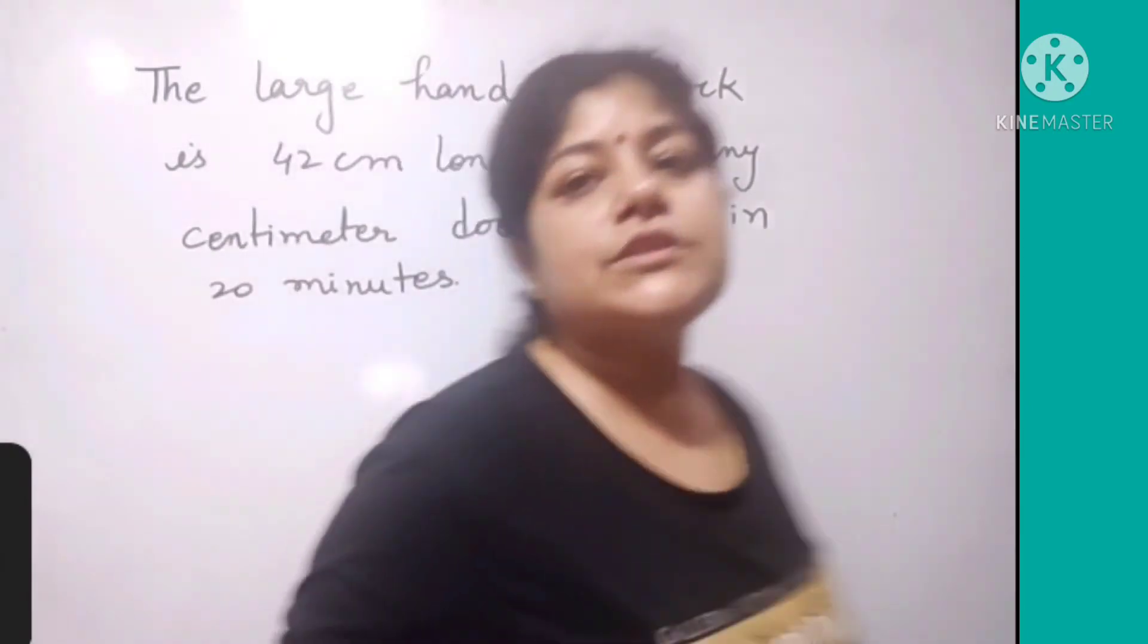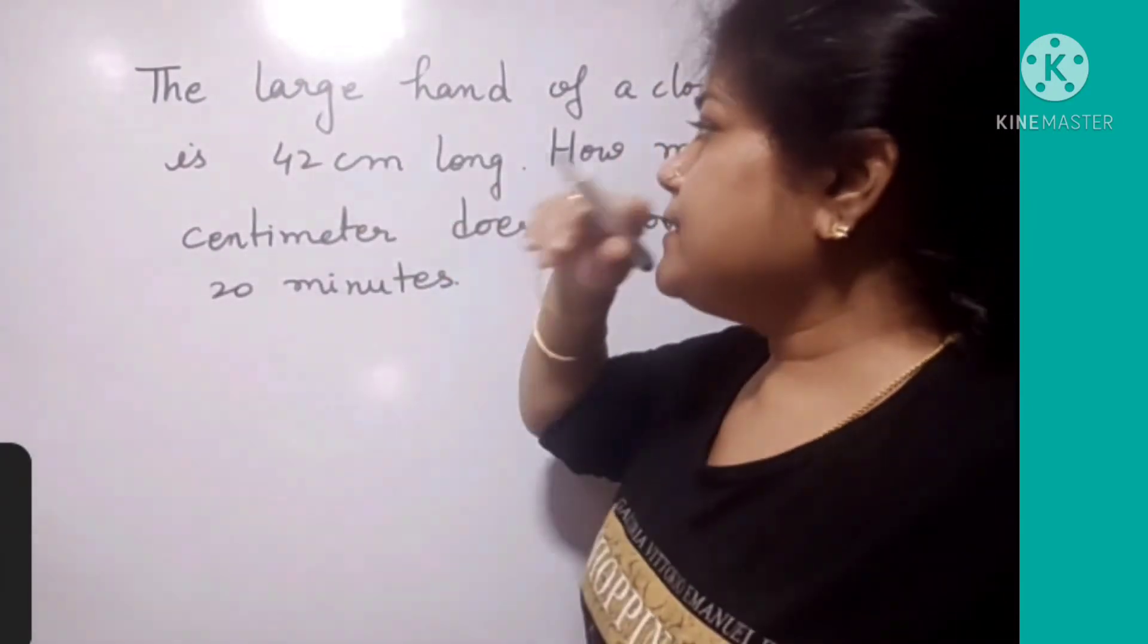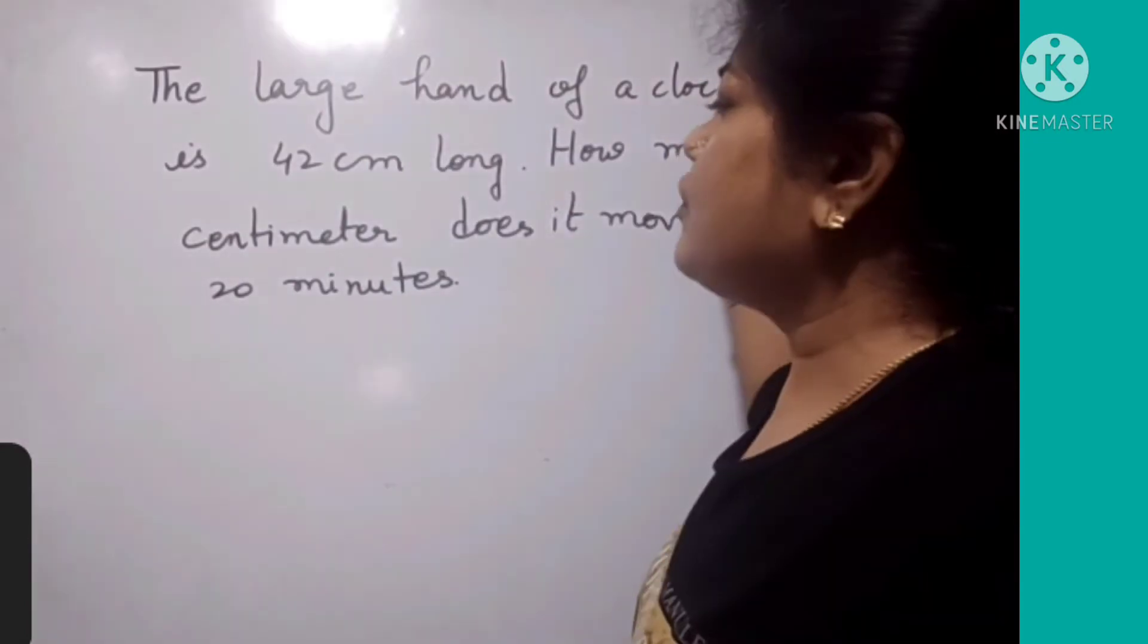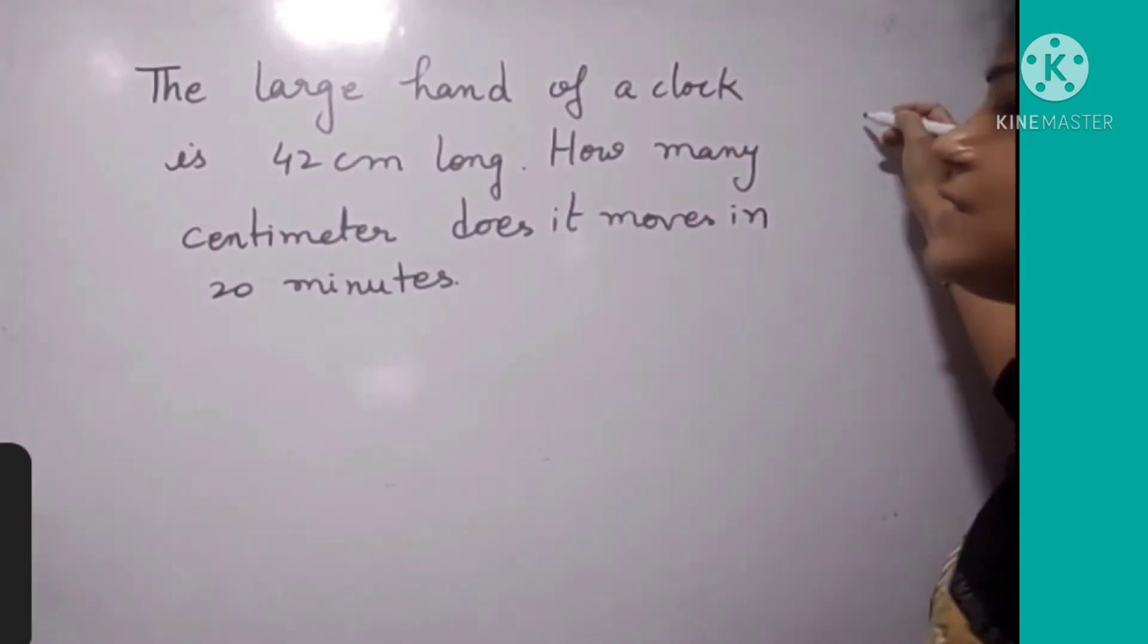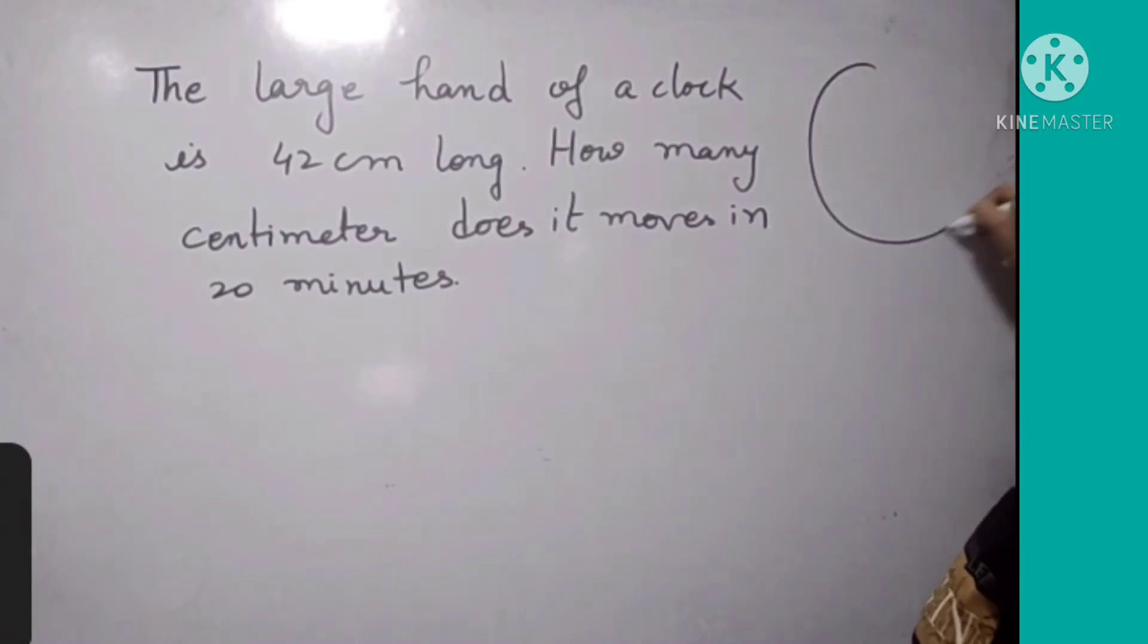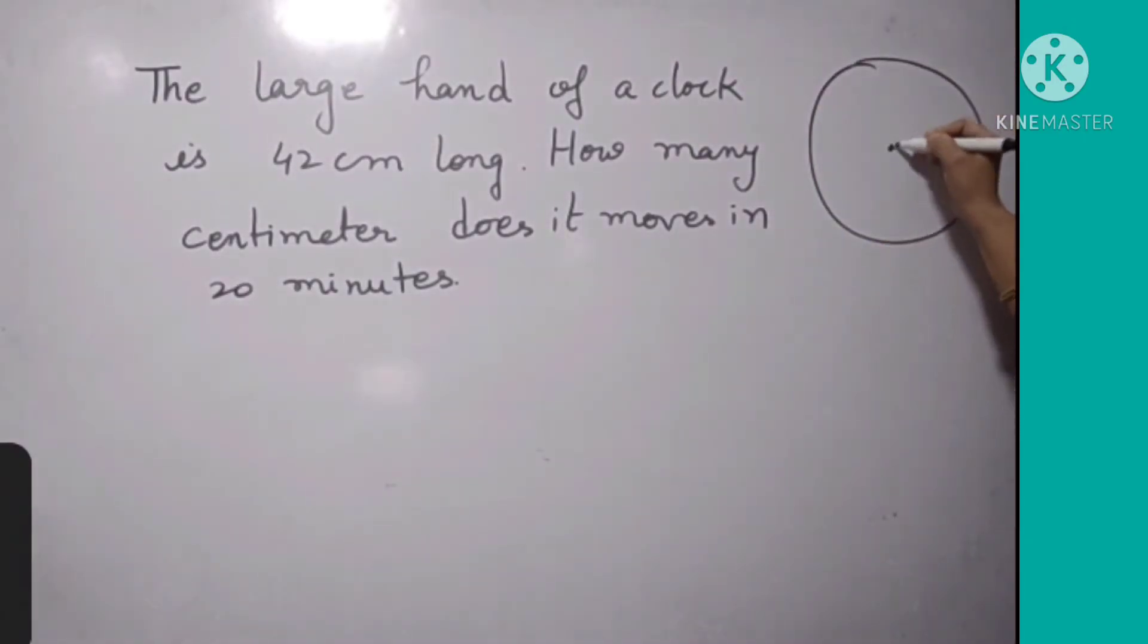Now, there are some theoretical questions based on the chapter Trigonometry. The first question is: the large hand of a clock is 42 cm long. For example, there is a clock with two hands - the small hand and the large hand. The length of this large hand is 42 cm.